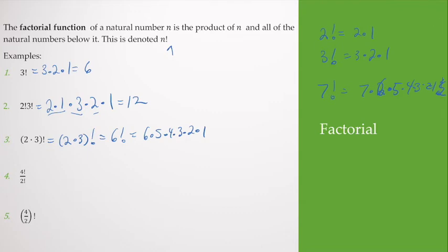6 factorial is 6 times 5 times 4 times 3 times 2 times 1. 6 times 5 is 30, 30 times 4 is 120, 360, 720. So my answer is 720.